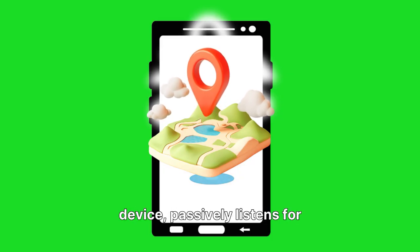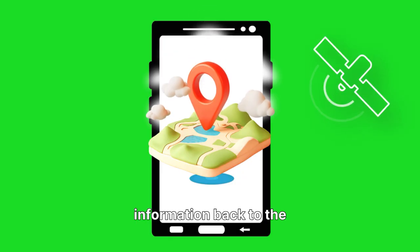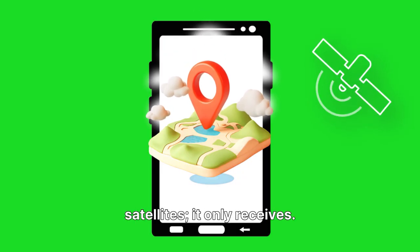Your GPS receiver, whether it's in your smartphone, car, or a dedicated device, passively listens for these signals. It doesn't send any information back to the satellites. It only receives.